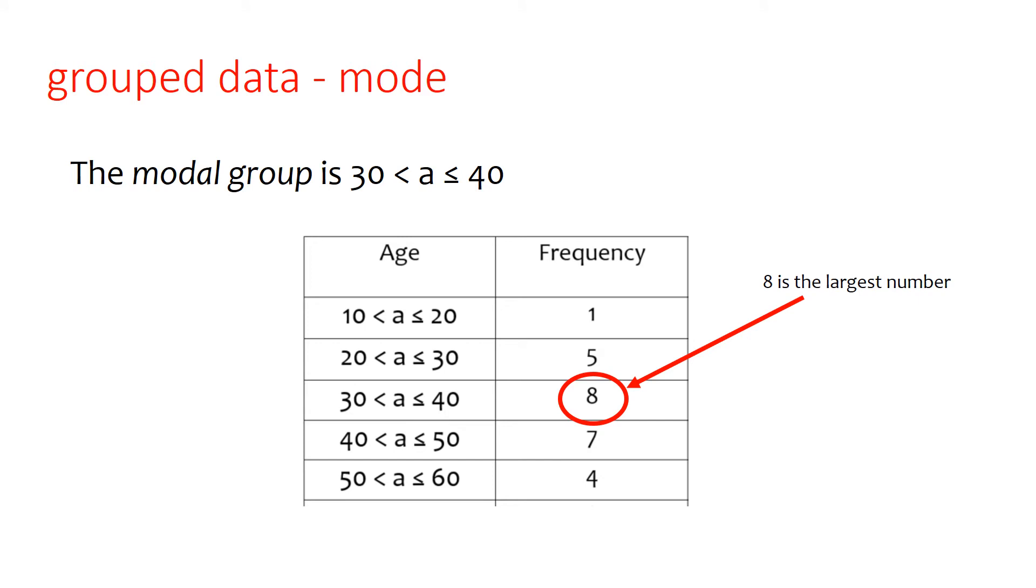So instead of working out the mode, we'll work out a modal group here, again, because we don't know what the actual value would be. So we look down the frequency column, 8 is the largest number here, so the modal group is the 30 to 40 age group.